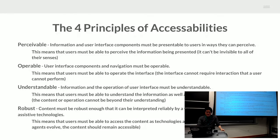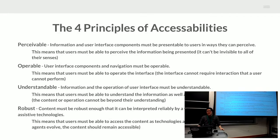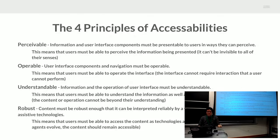Understandable means that information and the operation of the user interface must be understandable. This is a looser one because understandability is a harder concept to pin down. Essentially it means being very clear and very direct. I used to grade college papers, and I read through at least two dozen where I had no idea what the project was — that's an understandability issue.